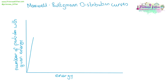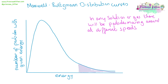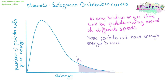A Maxwell Boltzmann distribution curve can be used to plot the number of particles at any given energy when you've got a gas or a solution. Within this gas or solution there will be particles that have a range of different energies — not all the particles are going to have the same value for energy. On the graph we can plot the activation energy, and any particles that have more energy than the activation energy will have enough energy to react successfully, but this will not be all of the particles within a solution or a gas.